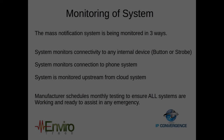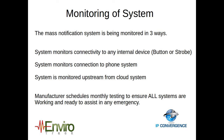Your mass notification system will be monitored at three levels. The first level is the mass notification system to all input devices — strobes, panic buttons, etc. The second level is from the mass notification system to your phone system, with that stream or API socket monitored at all times. Last, your on-site system will be managed and monitored by our cloud server to ensure that all three areas are ready for any type of emergency notification.